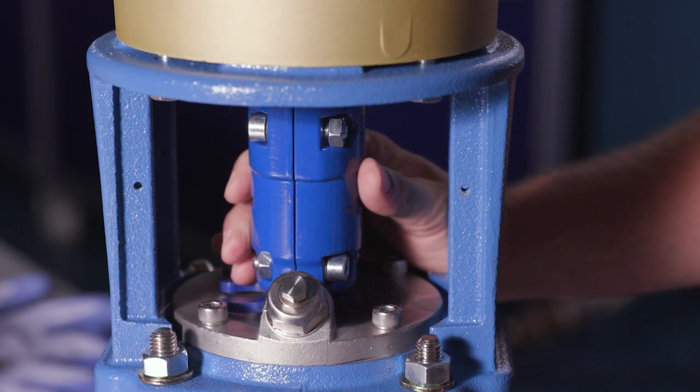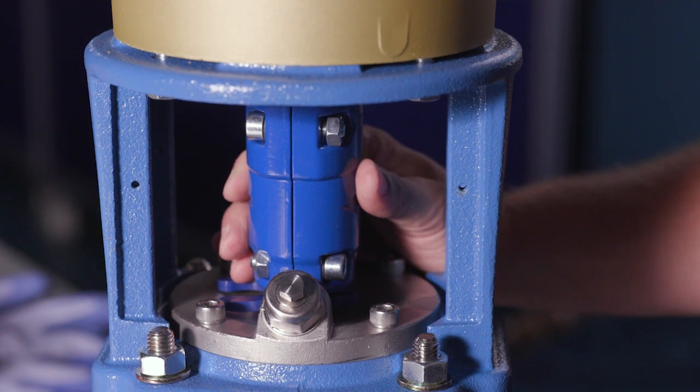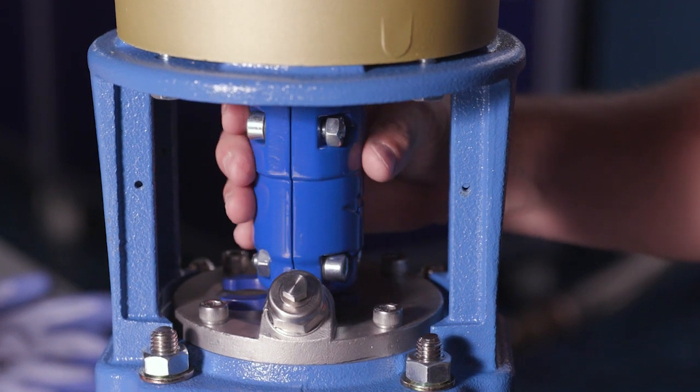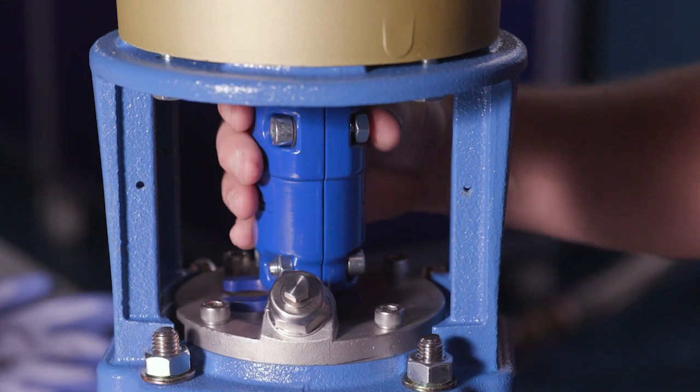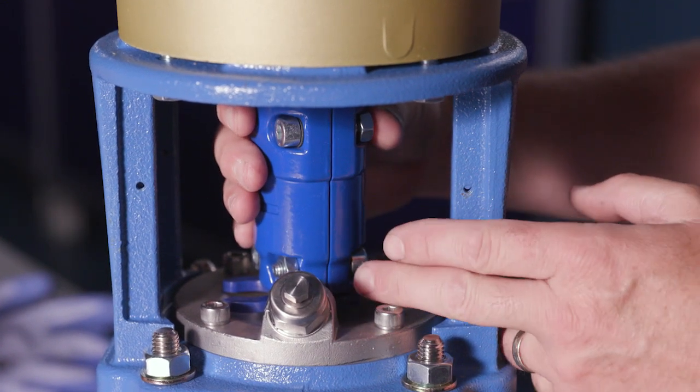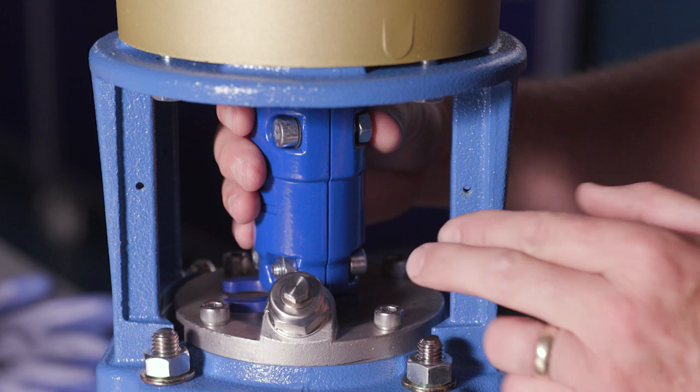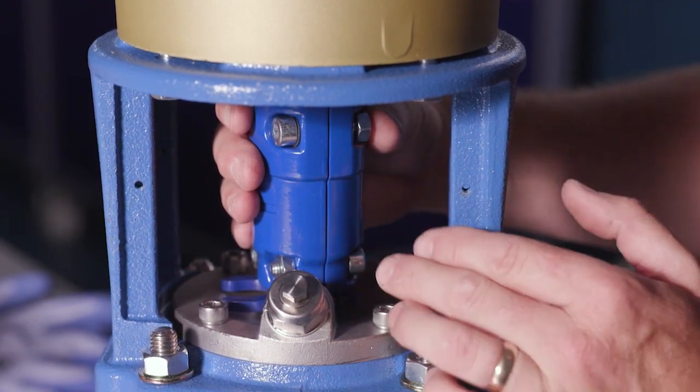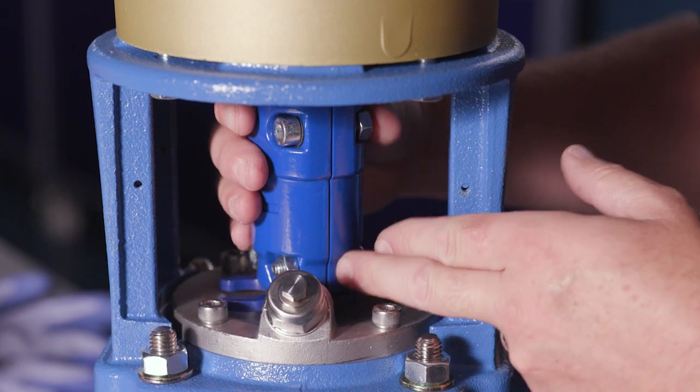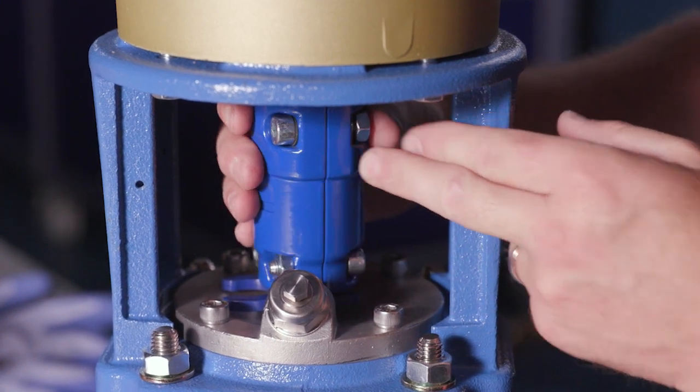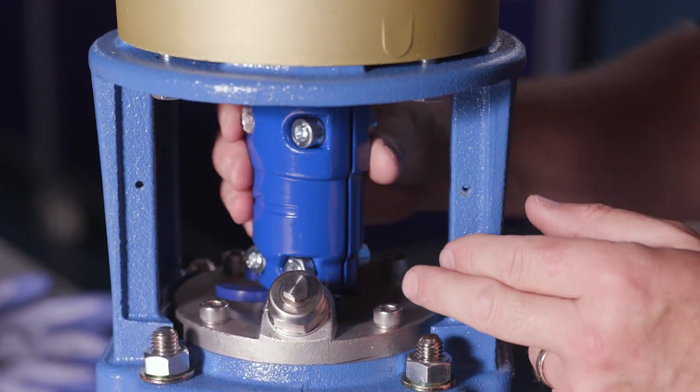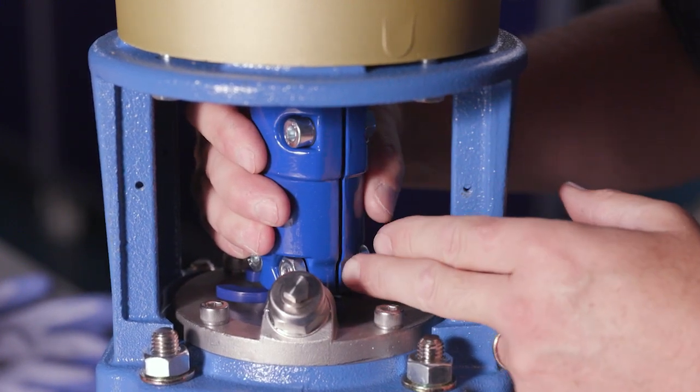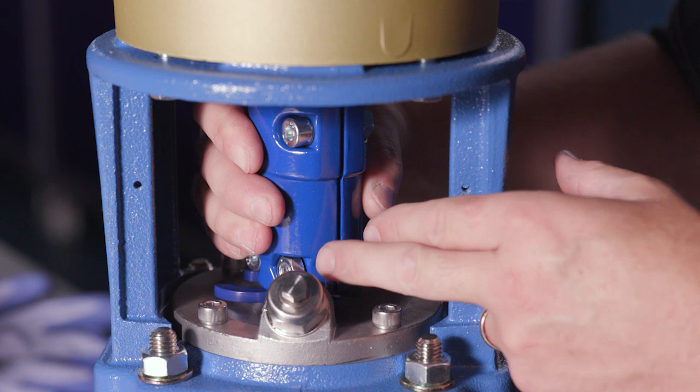Now that we've got the shim all the way in, we've set the stack height properly. In other words, those impellers have been raised just enough so that we got proper clearance. Now really the next step is you want to make sure that you tighten the coupling evenly, not only top to bottom but side to side.